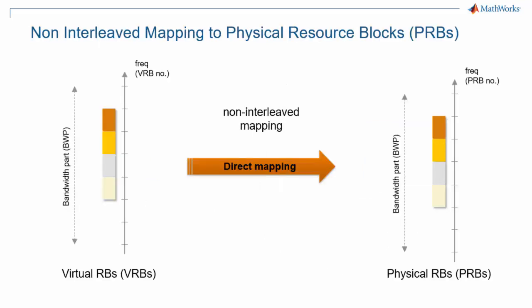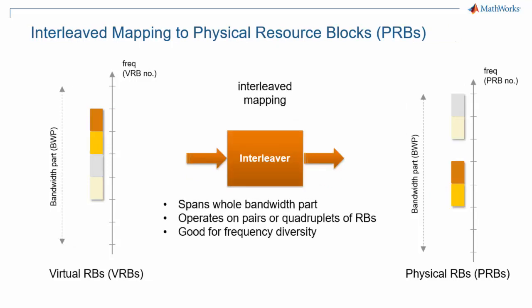Mapping of virtual to physical resource blocks can be interleaved or non-interleaved. Non-interleaved mapping directly maps each virtual block to the same position in the physical resource grid. Interleaved mapping provides frequency diversity by distributing virtual blocks over the whole bandwidth part, with granularity of two or four resource blocks. This scheme allows assigning consecutive virtual resource blocks to a PDSCH — easy to signal with a starting resource block and count — while still achieving frequency diversity.